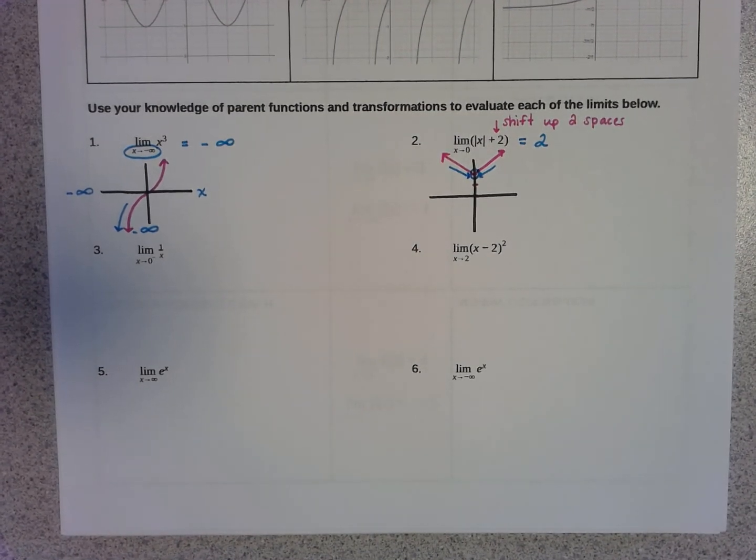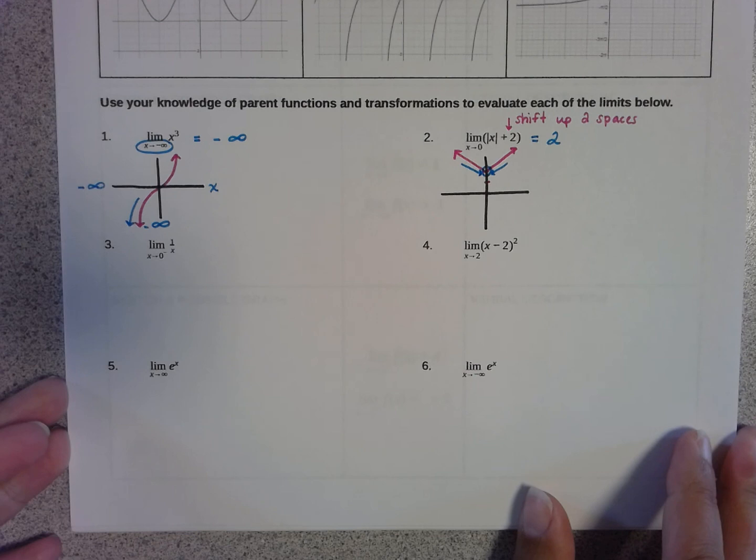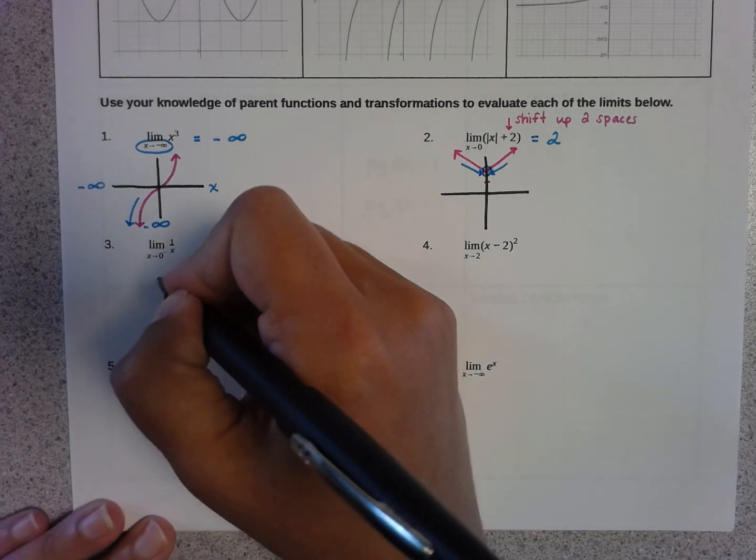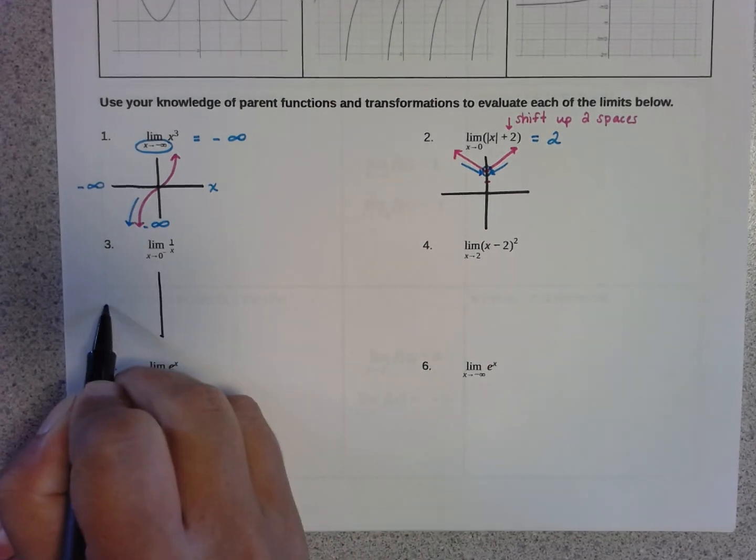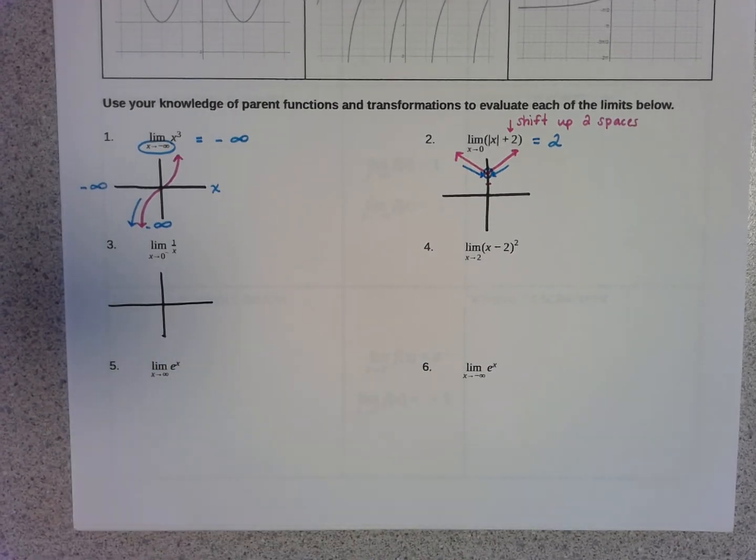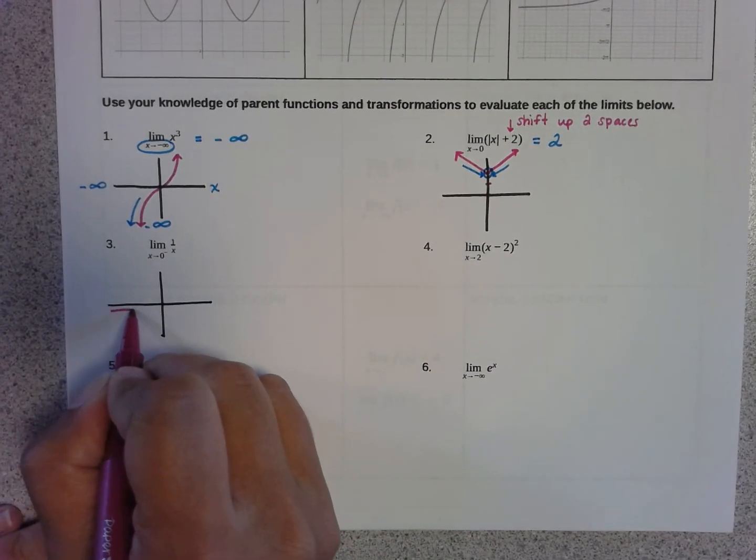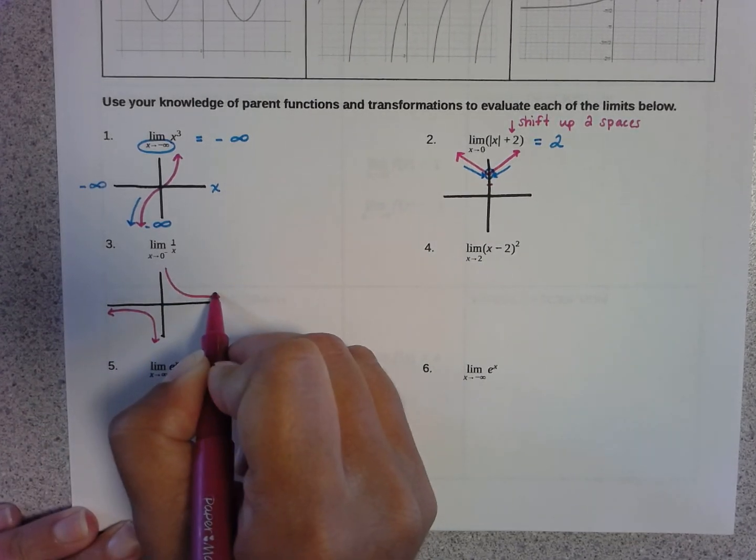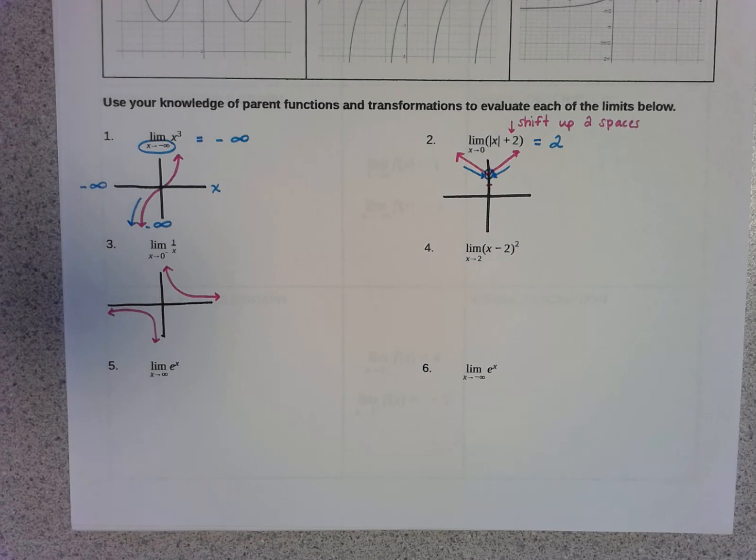For problem number three, it says find the limit as x approaches zero from the left of the function one over x. Now because I know my parent functions, I know that the sketch of the graph of the function one over x looks like this, where there's a vertical asymptote at the zero.